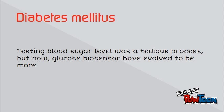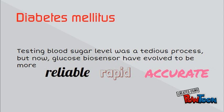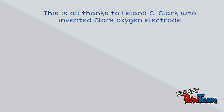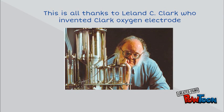Previously, testing of blood sugar level was a tedious process. But nowadays, glucose biosensors have evolved to be more reliable, rapid and accurate, and are also more compact and easy to use. Thanks to Leland C. Clark, he was the first one who invented the Clark electrode, a device used to determine the amount of glucose rapidly.